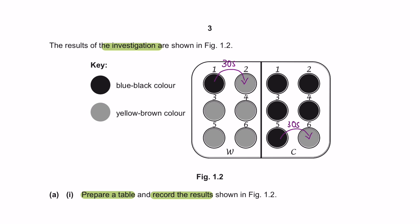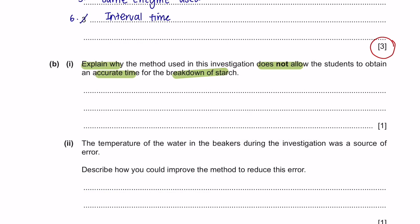So this is difficult to judge because the color change might have happened in the interval of 10 seconds or 50 seconds, so we will not be able to obtain an accurate time for the breakdown of starch.